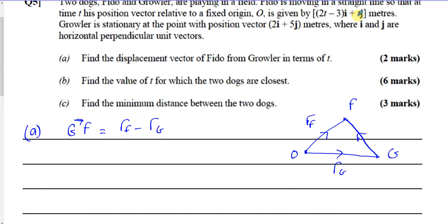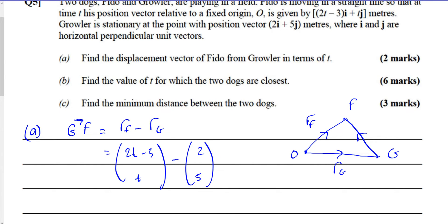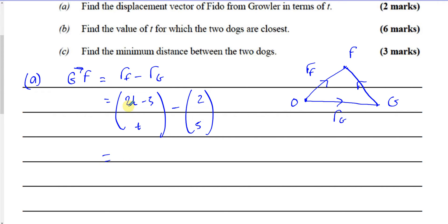Now they told us what RF is: RF is 2t minus 3i and tj. And RG, the position vector of Growler, is 2i plus 5j, so it's (2, 5). So the vector we're looking for is going to be 2t minus 3 minus 2, which is 2t minus 5, and t minus 5. That is the vector of how to get from Growler to Fido.